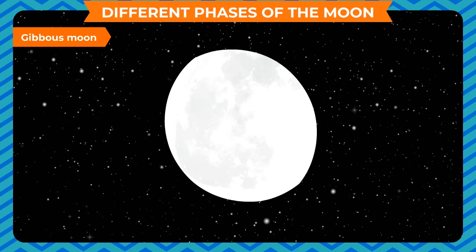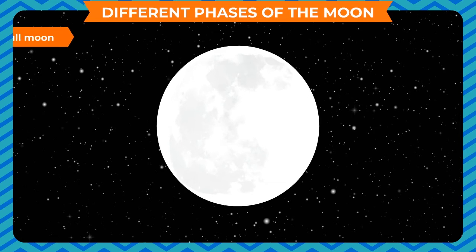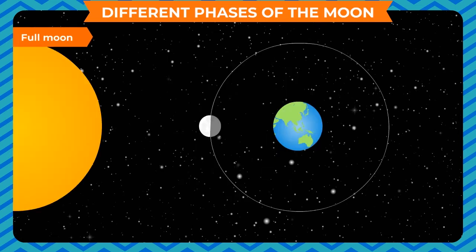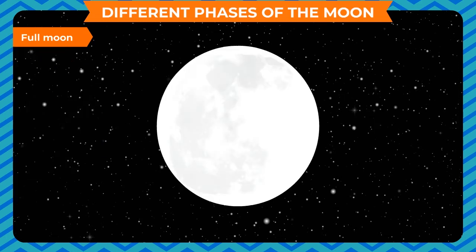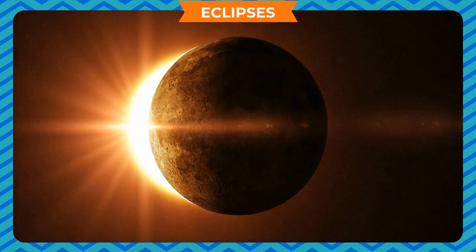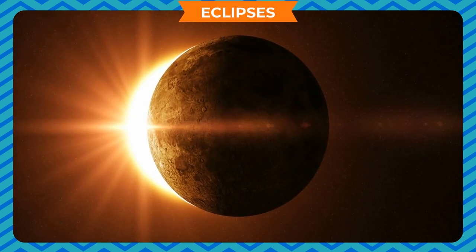Gibbous moon is when more than half portion of the moon is visible on the earth. Full moon occurs two weeks after the new moon, when the moon is halfway through its revolution. The illuminated half now faces the earth and we can see the full moon.